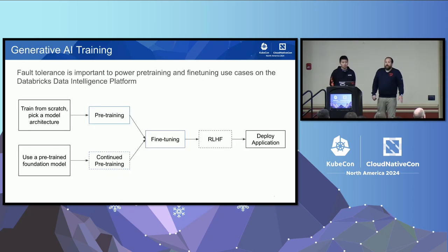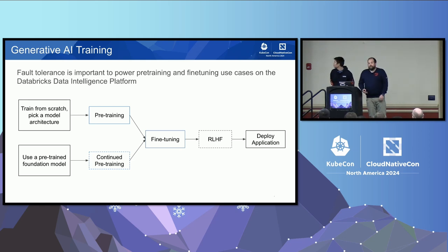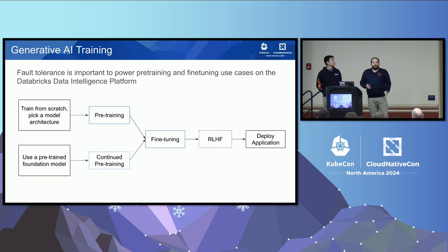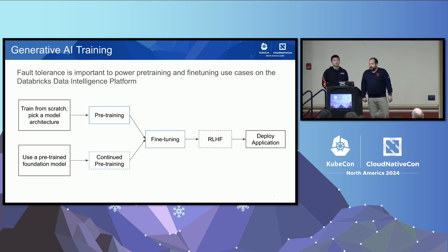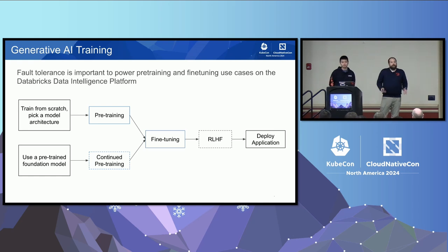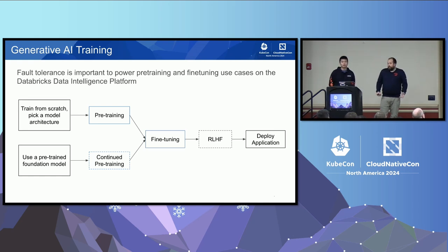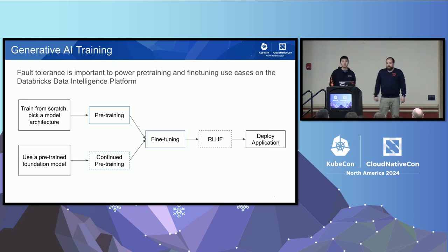We'll look at LLM training as a whole. Databricks is in the business of customizing LLMs, and you really have three starting points. First, you can create your own pre-training data set, pick a new model architecture, and pre-train the model from scratch. This is foundational model training — what DBRX was, as well as LLAMA, GPT, Gemini, Claude, and all of these big foundational models.